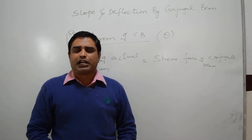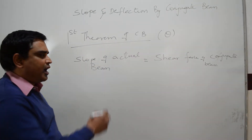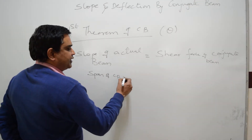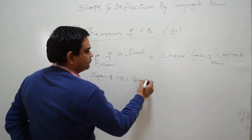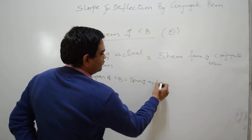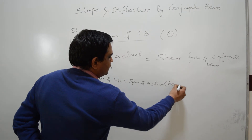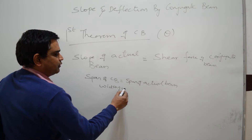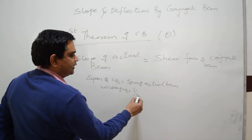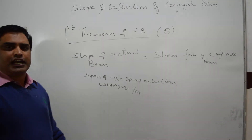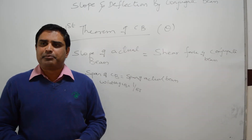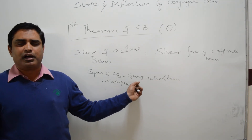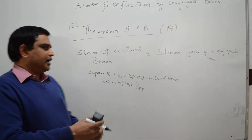The conjugate beam is an imaginary beam having a span equal to the span of the actual beam. The width of the conjugate beam is 1/EI. So the conjugate beam is an imaginary beam with the same span as the actual beam and a width of 1/EI.